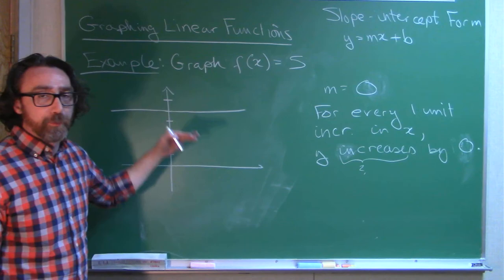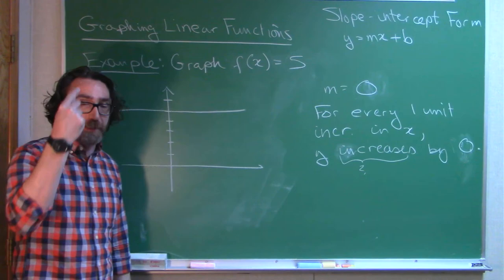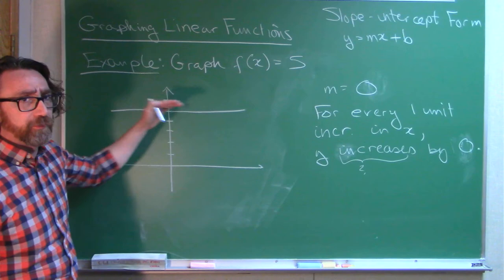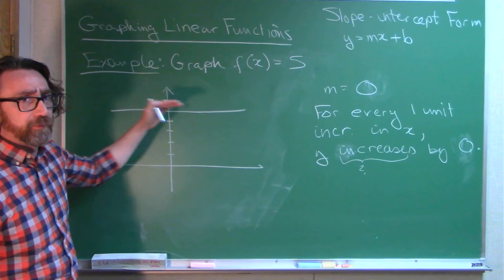The graph of this function would be a flat horizontal line. We call this a constant function because the y-value is constantly the same. There is no change in the y-value. So be careful of that. This is slope 0, gives us a flat horizontal line.